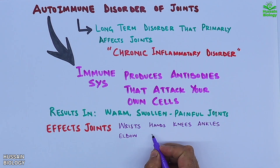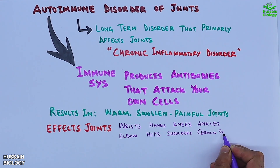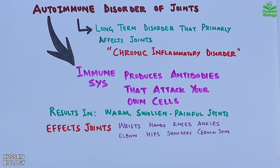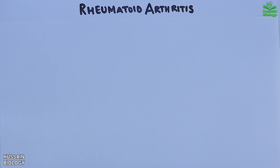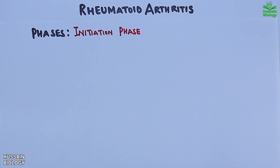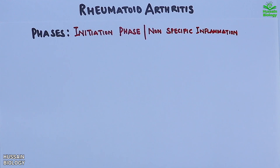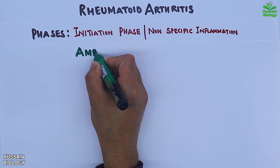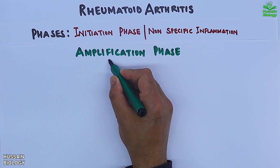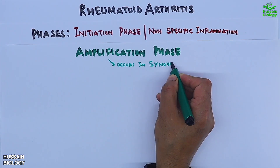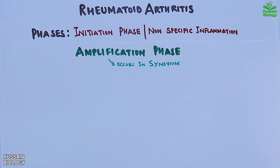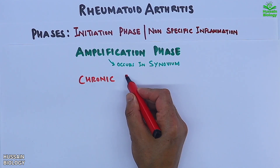Rheumatoid arthritis is divided into three important phases. The first phase is the initiation phase, which involves non-specific inflammation. The second phase is the amplification phase, occurring in the synovium. The third phase is chronic inflammation.